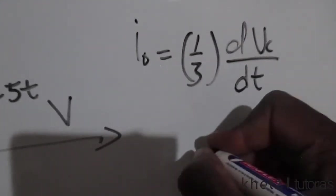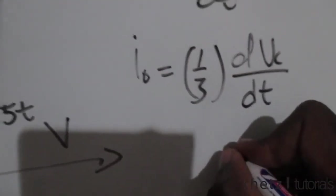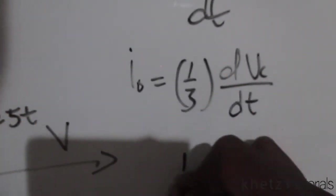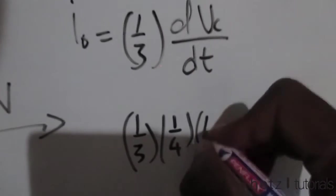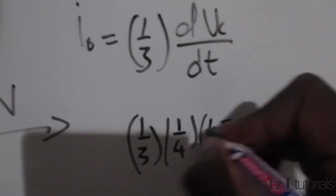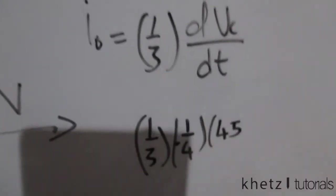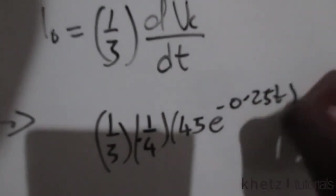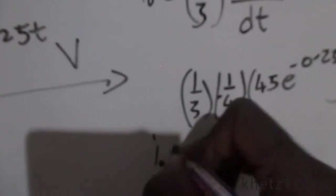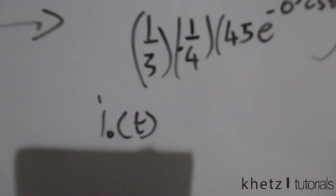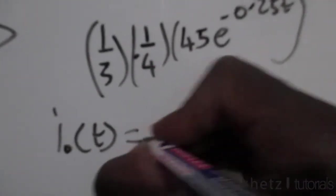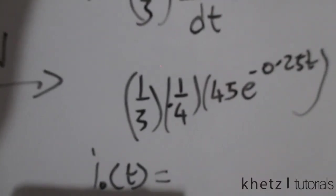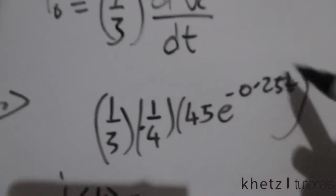Differentiating that we're going to have 1/4 multiplied by 1/3, then it's going to be negative over here, then 45 e to just that. So our io(t) for time greater than or equal to zero is going to be just this.